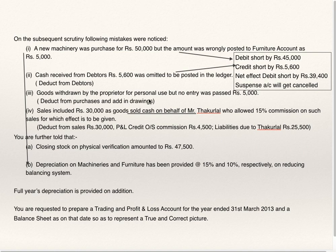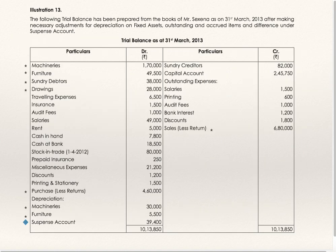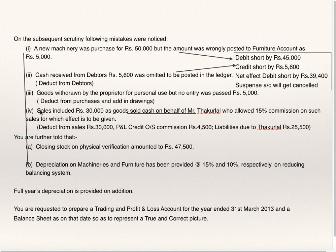Goods withdrawn by proprietor for personal use but no entry was passed — 5,000. Deduct it from purchases and add to drawings. From purchases you are supposed to deduct this amount and add it in drawings.